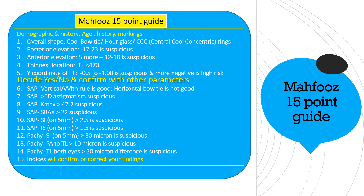This 15-point guide works in a way that you have got five points to look for, and after those five you will decide whether the patient may have a corneal pathology or may not. Then you will confirm with the rest of the parameters, and number 15 is the indices, which will confirm or correct your findings.